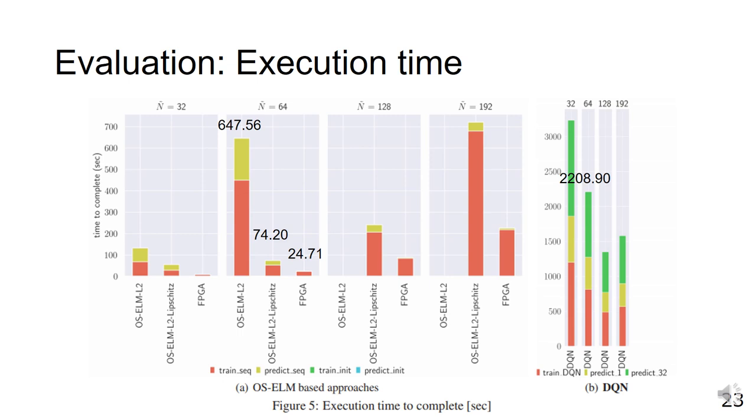Moreover, the FPGA runs three times faster than OS-ELM-L2-Lipschitz when N is 64, even though the algorithm is identical, because dedicated circuits can efficiently accelerate trainSeq and predictSeq.